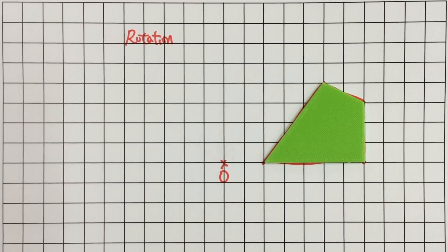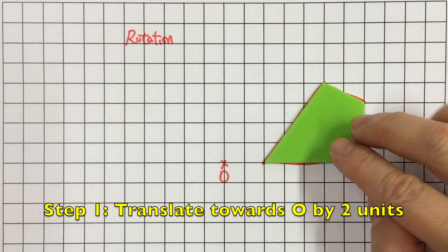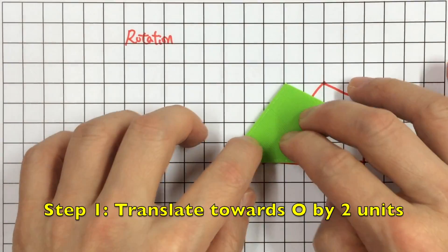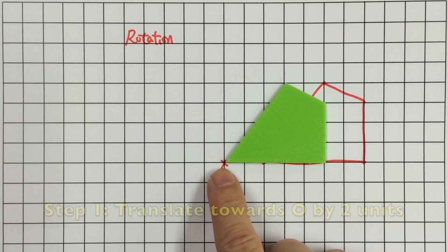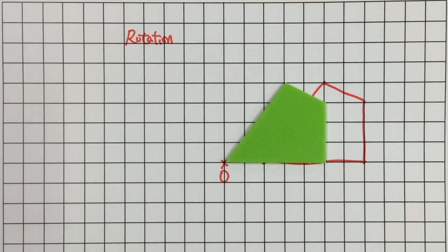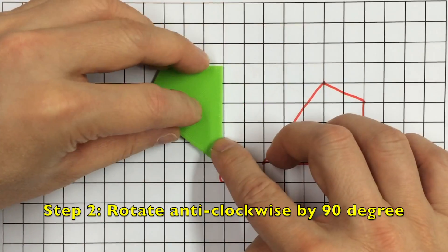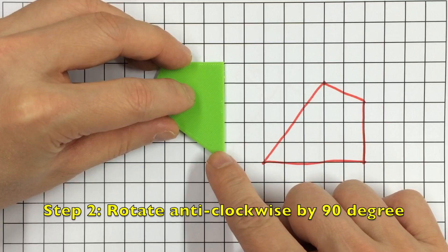So we can do it in this way. First of all, we translate the object towards the left side by two units so that the vertex touched the center O. And then we rotate it by 90 degrees to reach this position.